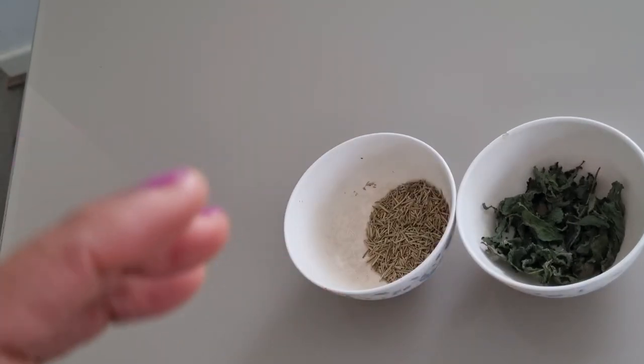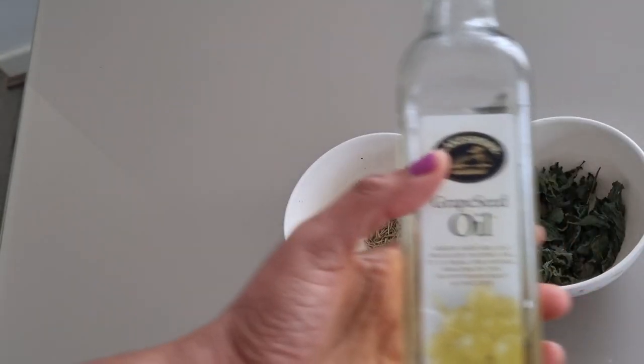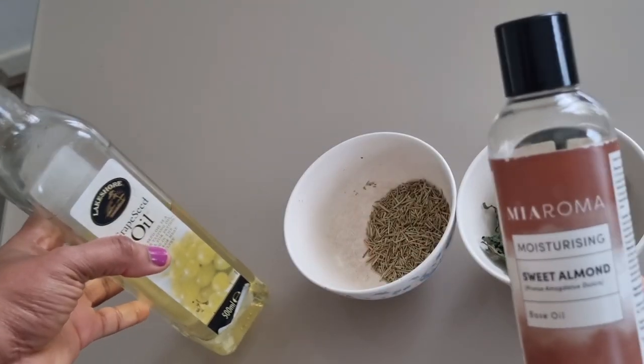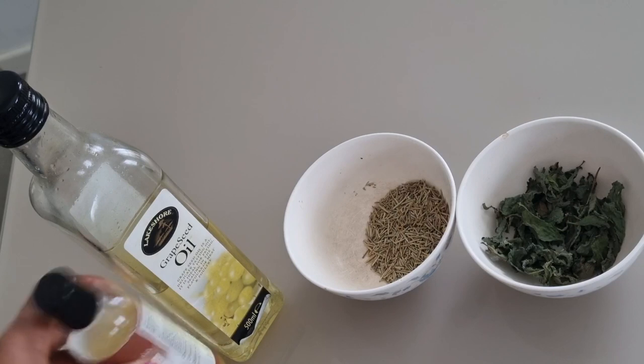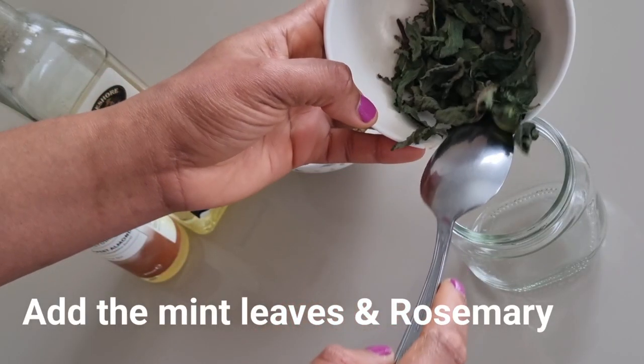For this oil, you can use any oil of your choice but I'm going to be combining two oils. I'm using grapeseed oil and almond oil. So into the jar, I'm going to add the mint leaves.